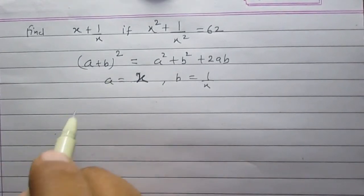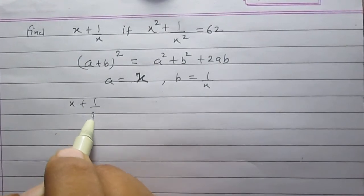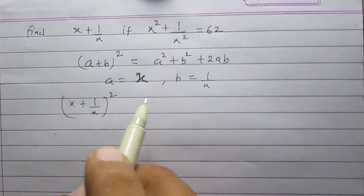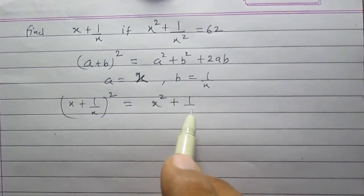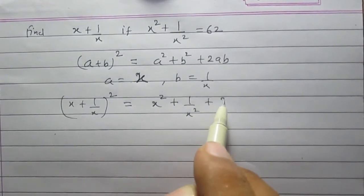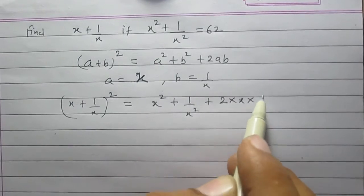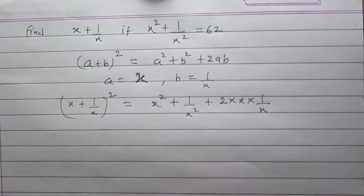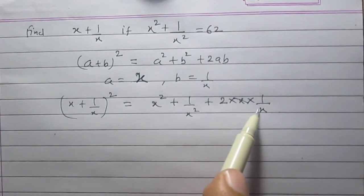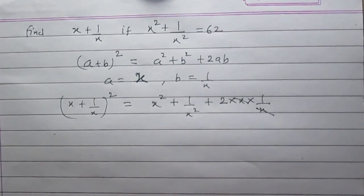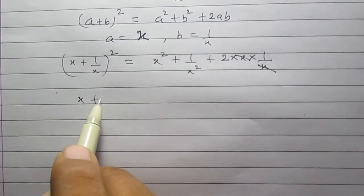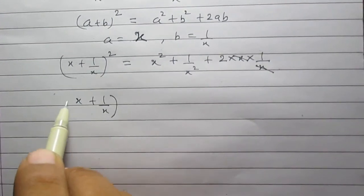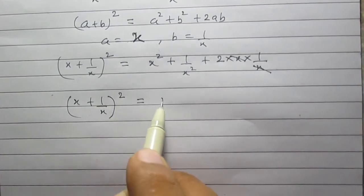We can write x plus 1 upon x whole square is equal to x square plus 1 upon x square plus twice of x multiplied by 1 by x. The x in the numerator can be cancelled by x in the denominator, so we get x plus 1 upon x whole square as x square plus 1 upon x square plus 2.